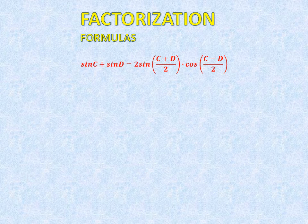Sin C plus sin D is equal to 2 sin((C plus D) upon 2) into cos((C minus D) upon 2).